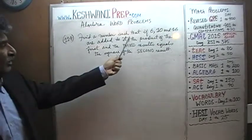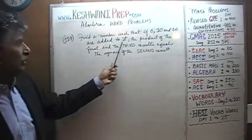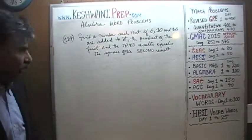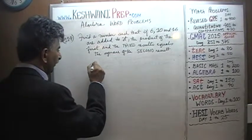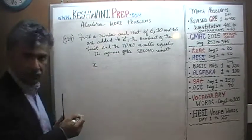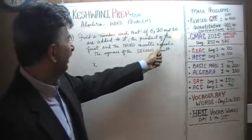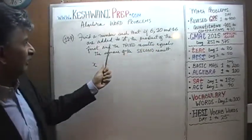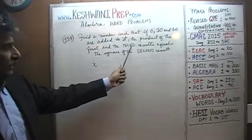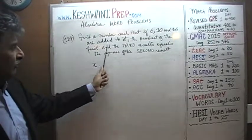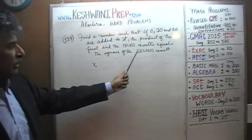Problem number 114: find a number such that if 6, 10, and 16 are added to it, the product of the first and the third results equals the square of the second result. So we have a number — let's call it X.